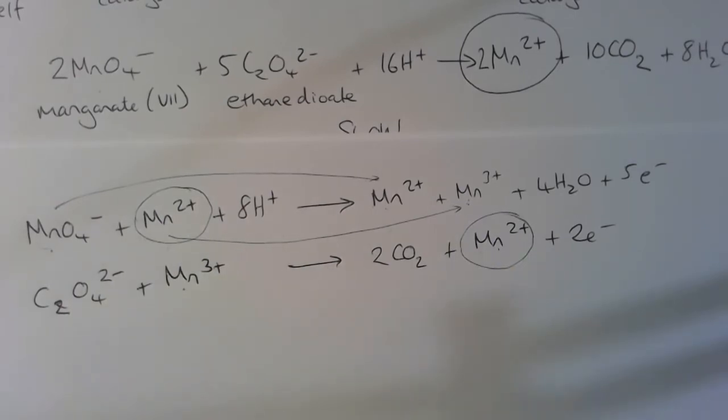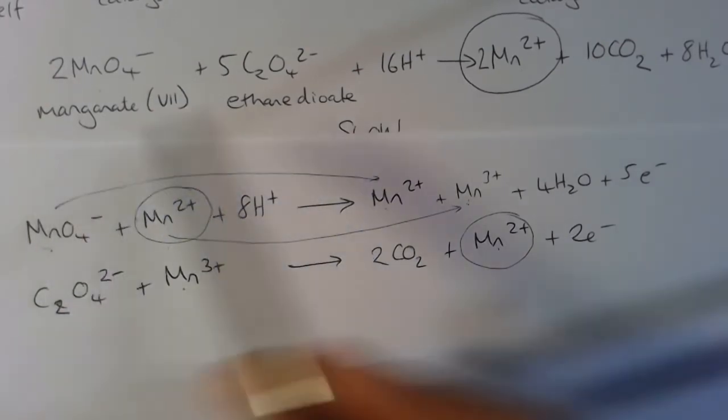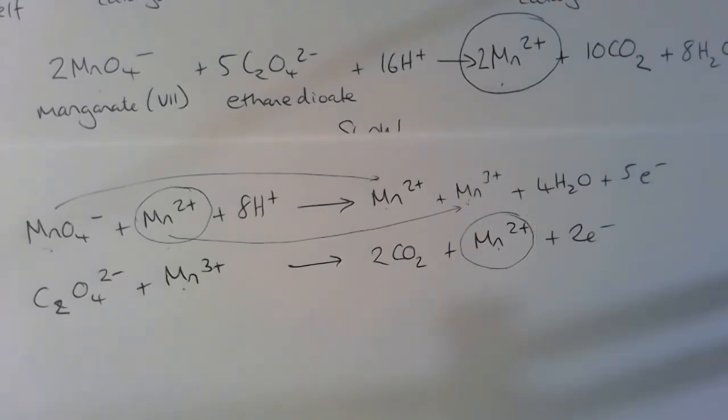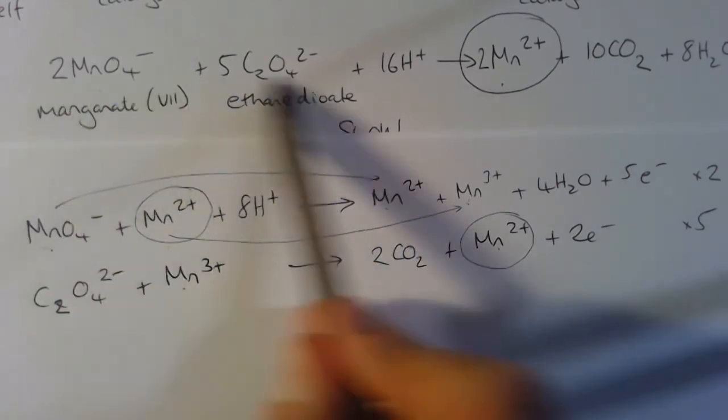So if we're going to take one key idea away from this, it's that an autocatalytic reaction is one where the catalyst is formed as a product during the reaction, and the reaction therefore suddenly speeds up after the reaction has started. Here are the two equations we need to know. If you actually multiply this top equation by 2 and this bottom equation by 5 in order to balance the electrons and then cancel everything out, you will actually end up with this equation at the top. But that really isn't the focus of this lesson.